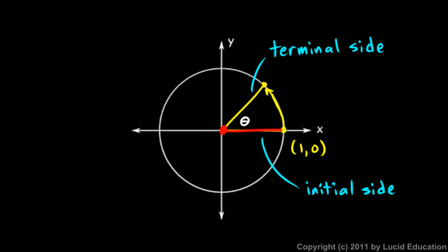We can see the angle theta as the segment rotates through that angle. It's often helpful to think of it as moving from one position to the other — in other words, we can think of angle theta as an amount of rotation. It's often said that this segment rotates through angle theta.